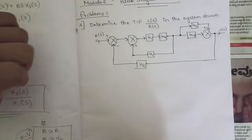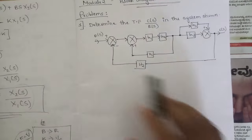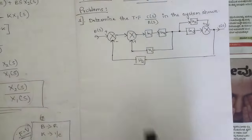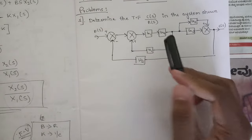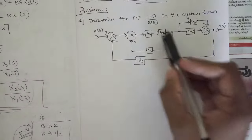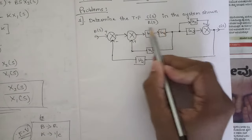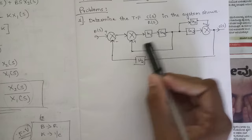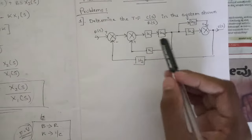We need to reduce this block in such a way that we are left with only a single block, and we are going to solve this using the rules of block diagram reduction. First, you need to see the simpler blocks — the feedback blocks. Here we can see that G1 and G4 are continuous in a straight path. Since they are in series, we need to multiply these two and reduce them into a single block G1G4. After that, G1G4 along with H1 is attached to a summing point — this is a minor loop.